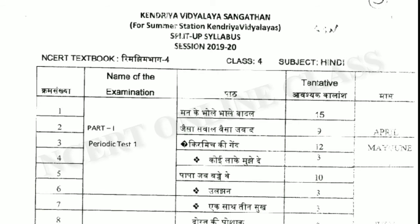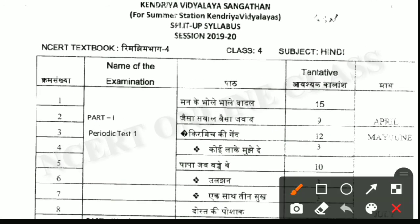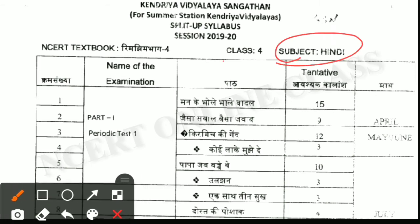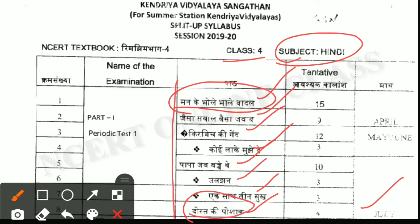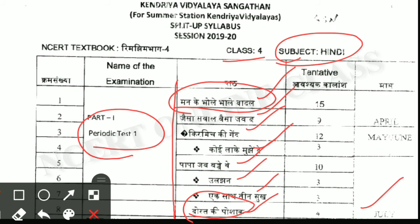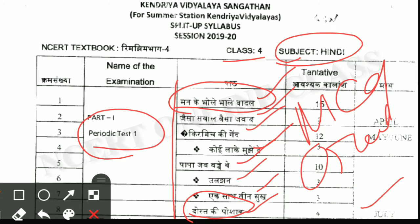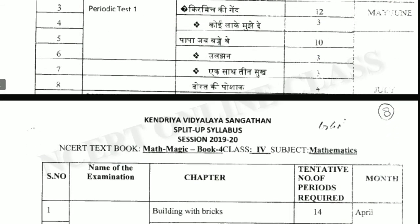Next subject is Hindi. For class 4 Hindi, there are also chapters one through eight, up to the month of July. Starting from 'Man ke Bhoole Bhoole' to 'Badal Se,' 'Dosto Ki Posak' — it is the first chapter and the last chapter. From all of these chapters, questions and answers will come, and an unseen passage will come in the exam. The exam pattern includes MCQ, oral test, and worksheet basis in an online pattern. Practice very carefully.